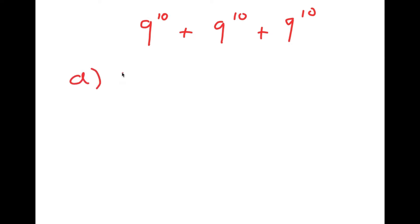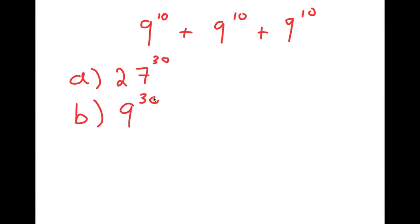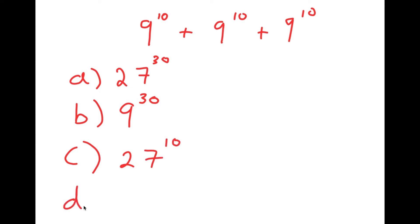For A, I have 27 to the power of 30. For B, I have 9 to the power of 30. For C, I have 27 to the power of 10. And for D, I have 3 to the power of 21.